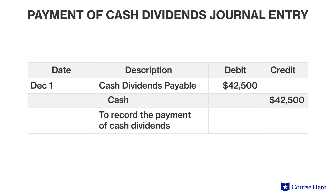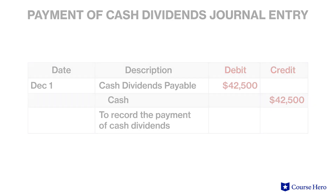On the date of record, no journal entry is necessary. On the date of payment, December 1st, the journal entry would include a debit to dividends payable, the liability account, and a credit to cash to show that the payment was made.